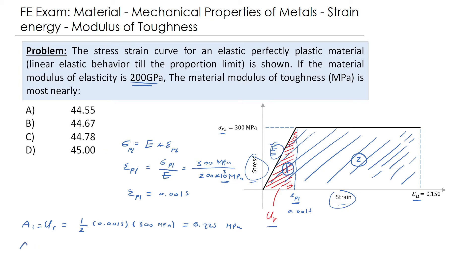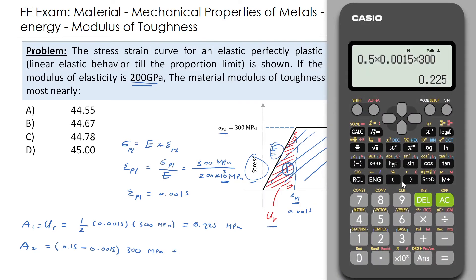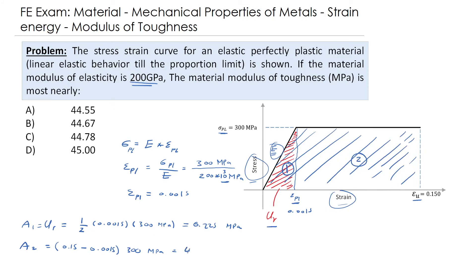For Area 2, it is the difference between the ultimate strain and the proportional limit strain: 0.115 minus 0.0015, multiplied by the stress at the proportional limit of 300 megapascal, giving approximately 44.55 megapascal. The modulus of toughness is Area 1 plus Area 2, which equals 0.225 plus 44.55, giving approximately 44.78 megapascal.